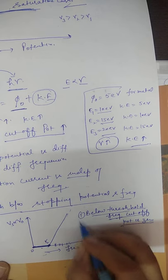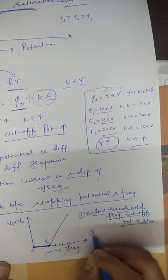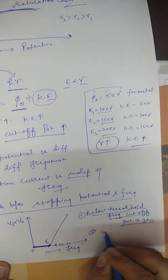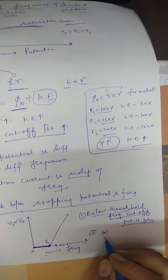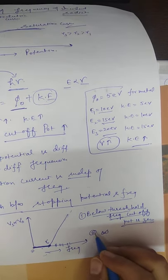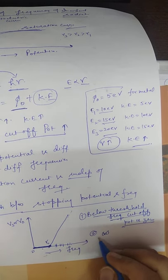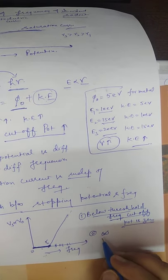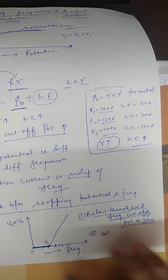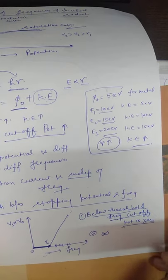So below threshold frequency, the cut-off potential is zero. Second point: this cut-off potential is directly proportional to frequency. In the next video, I will tell you about the significance of this curve. Thank you.